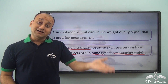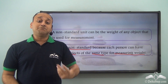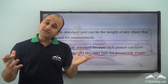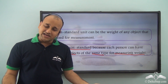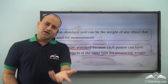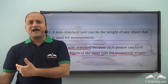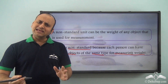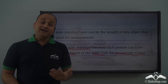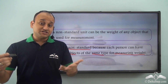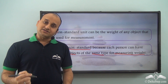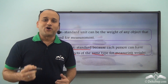In earlier times, when people did not have any standard weight to measure things, they used objects like rocks, batteries, or other items to measure things and charge customers accordingly.